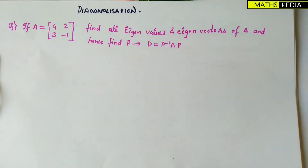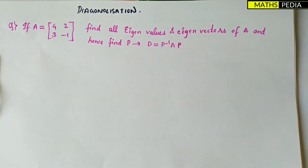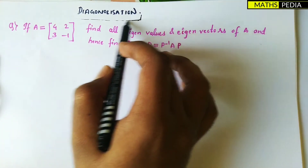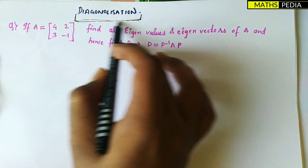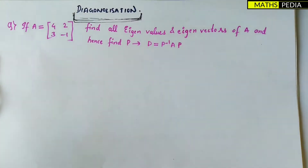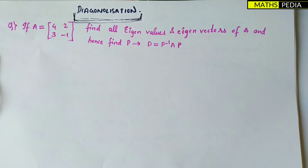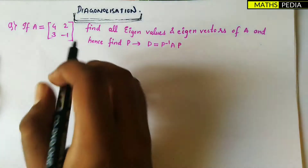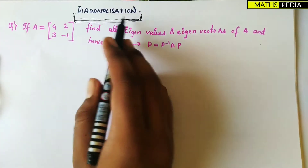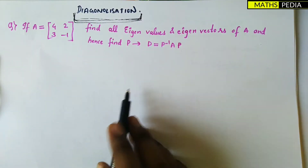Hello guys, in this video we are going to understand the concept of diagonalization. What does this term mean? We'll understand the definition, why we find it, and how to find it. This is based on a 2×2 matrix and we'll try to solve one problem also.